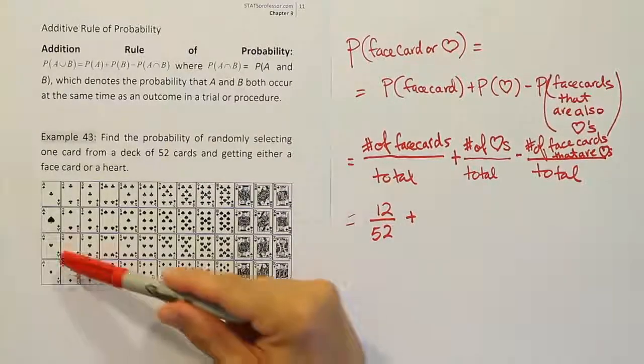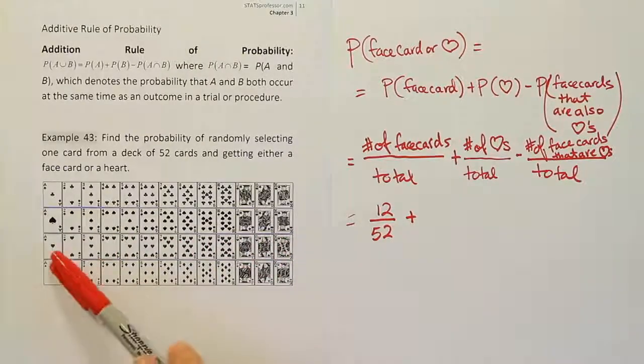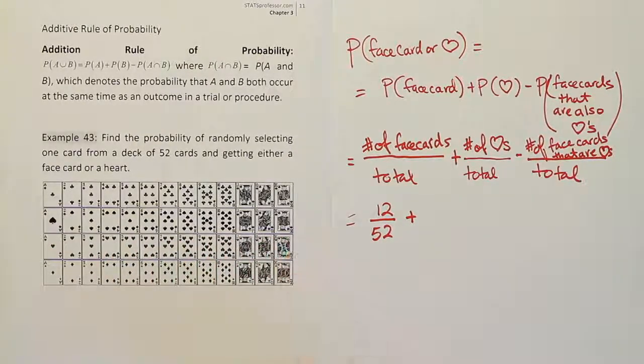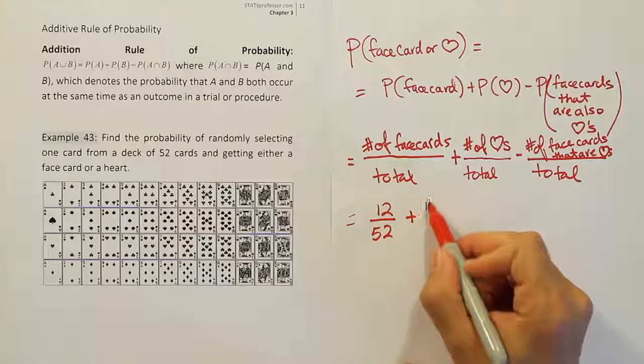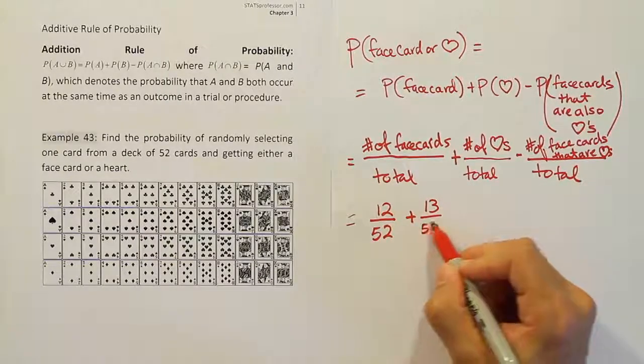Well, we have hearts here. If you count those up, you'll see there are 13 of them. 13 hearts in that row. So there are 13 hearts over the total of 52 cards.